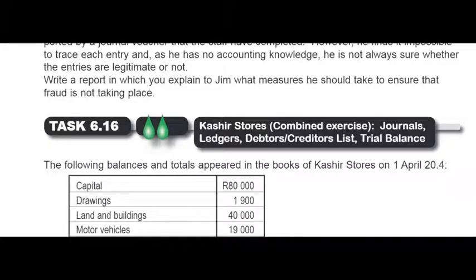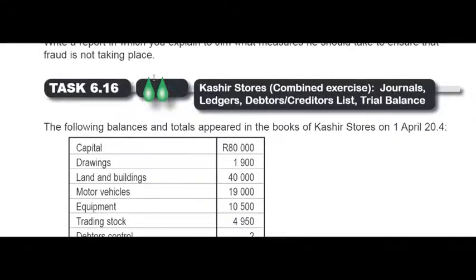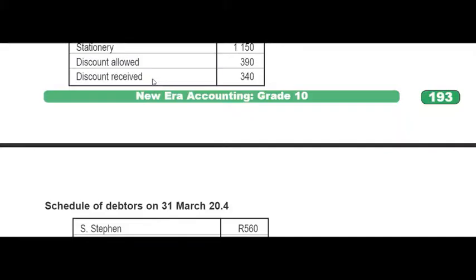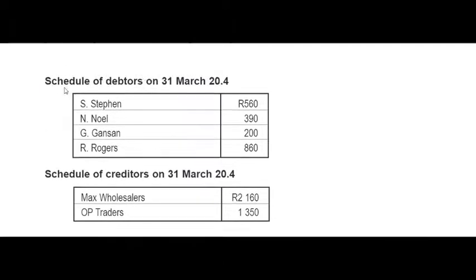In this video I'm going to explain the recording of the transactions of Task 6.16 into the relevant journals. You could skip all of the opening balances, but please remember that these opening balances for debtors and creditors are important because sometimes the transactions refer back to the amount owed on the 1st of April.